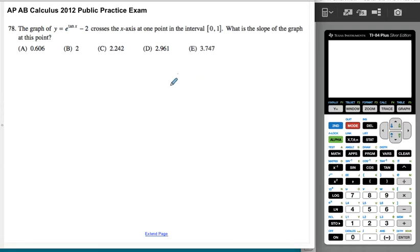Now this is one where the calculator is clearly required, so just kind of be mindful of that. The graph of this function crosses the x-axis at one point in the interval. What is the slope of the graph at that point? Okay, so now there's two things happening. Number one, we need to find the x value when e to the tangent x minus two equals zero.